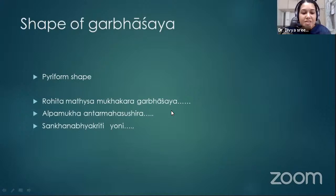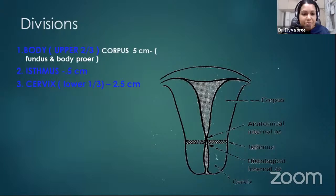The shape of the uterus is mentioned as pyriform shape. In our classics, it is described as 'alpamuham andarmahasushiram' — meaning the cervical opening is small and the uterine cavity is big. The shape is also compared to a conch shell as mentioned in classical texts.